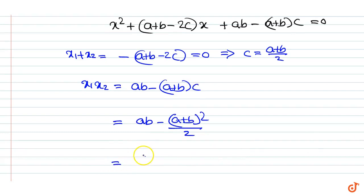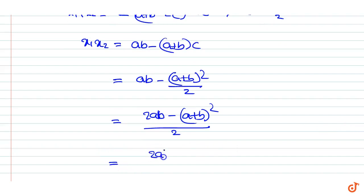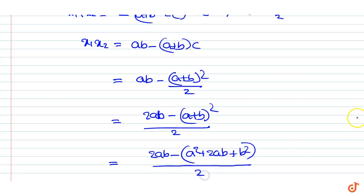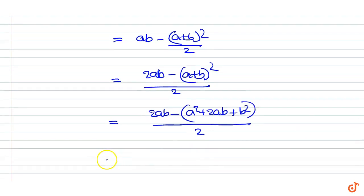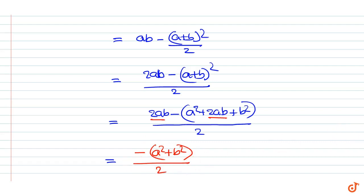Expanding: this is equal to (2ab − (a² + 2ab + b²)) / 2, which simplifies to (2ab − a² − 2ab − b²) / 2. Canceling the 2ab terms, we get −(a² + b²)/2. That is our answer.